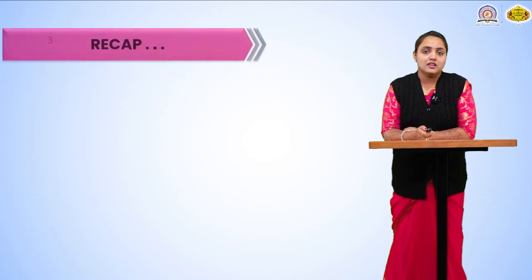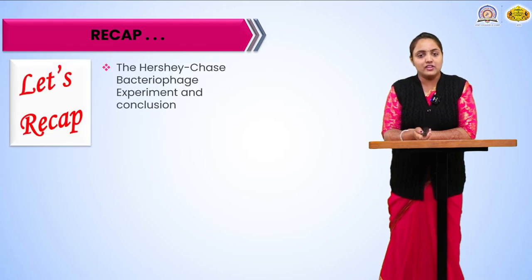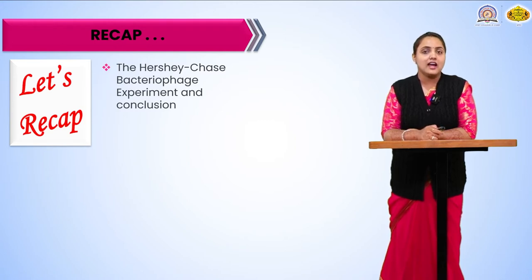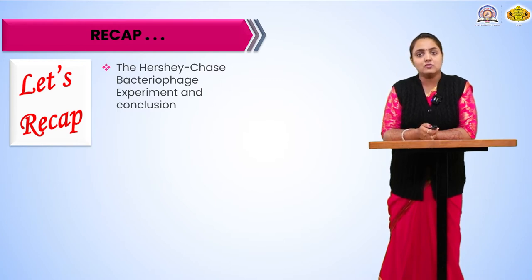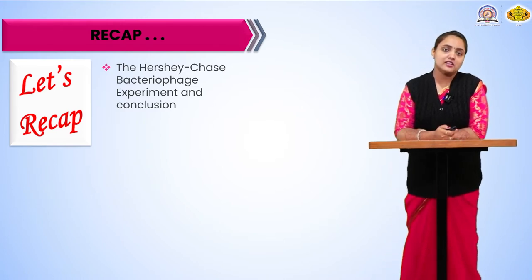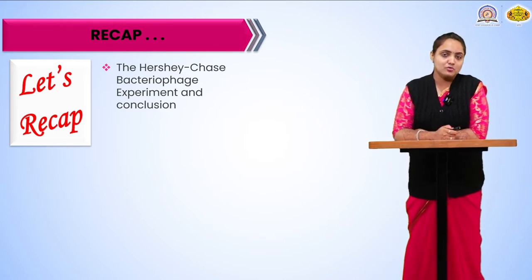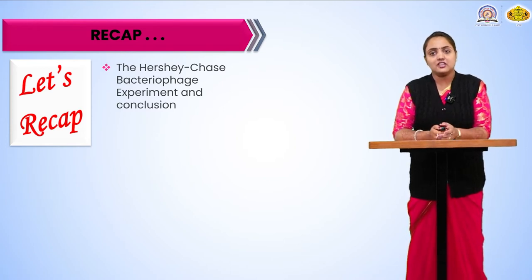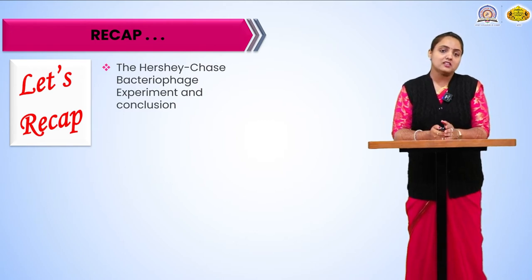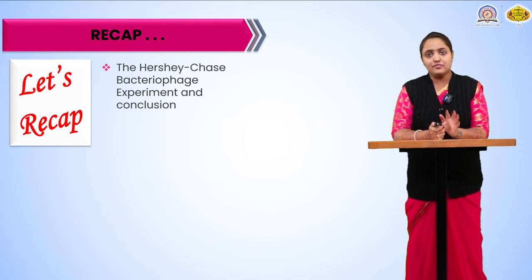Before starting today's session we are going to recap what we have learned earlier. In our earlier session we have already seen the various experiments which proved that DNA was the genetic material. Frederick Griffith was the first scientist who proved this, and the transformation principle was given by him. Then Avery McLeod also proved it using the conclusions of Frederick Griffith, and after that various experiments were carried out to prove that DNA is the only genetic material present in living cells.